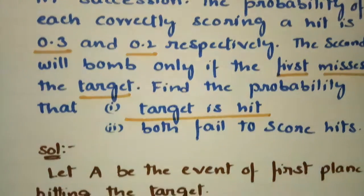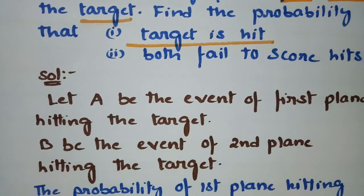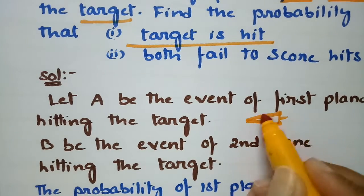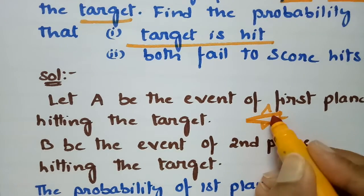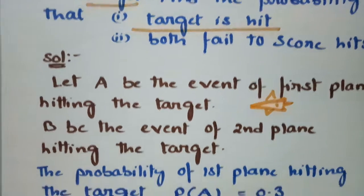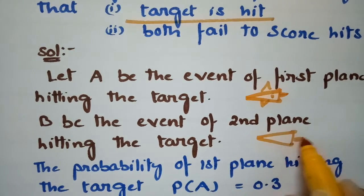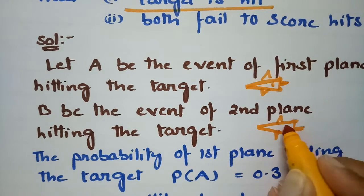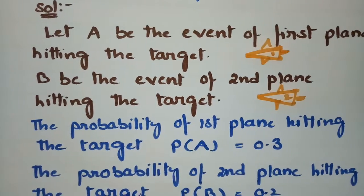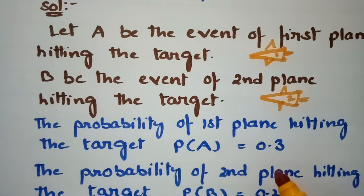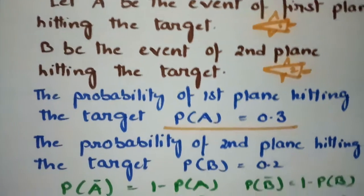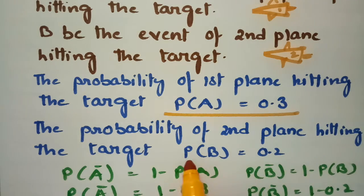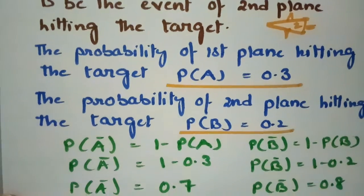Let A be the event of the first plane hitting the target, and B be the event of the second plane hitting the target. So A and B represent the two planes. The probability of the first plane hitting the target is 0.3, and the probability of the second plane hitting the target is 0.2.